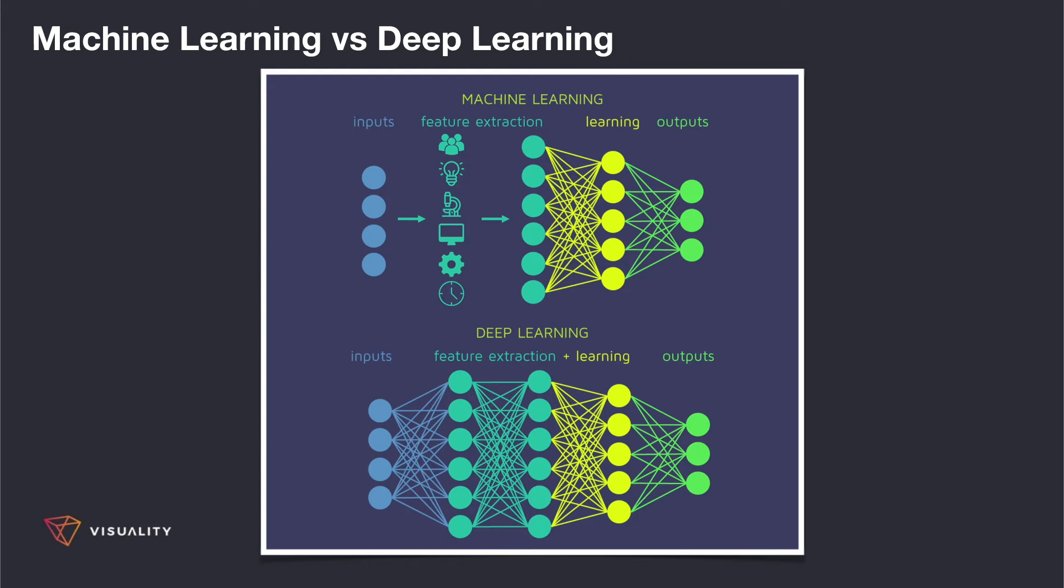This manual extraction of features is the major disadvantage when it comes to machine learning. There are a large number of inputs, and this task of manual feature extraction becomes extremely difficult and time-consuming, and this leads to the evolution of deep learning.